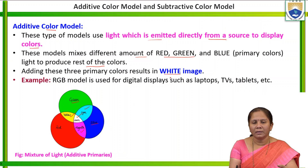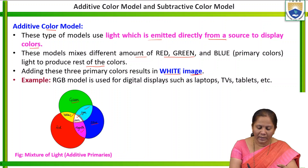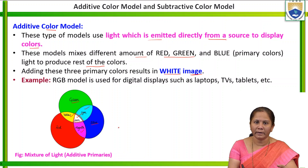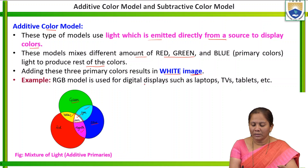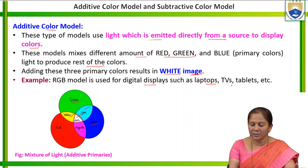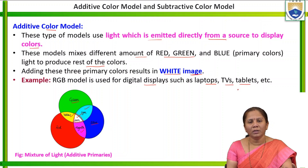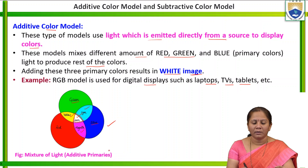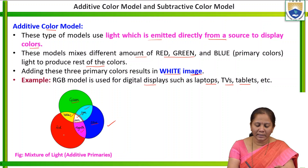In the additive color model, the three primary colors — red, green, and blue — are mixed to produce other colors like yellow, cyan, magenta, and white. Adding all three primary colors results in white. For example, the RGB model is used in digital displays such as laptops, TVs, and tablets. In the additive color model, combining red, green, and blue gives white color.